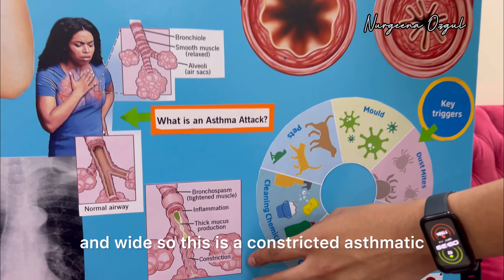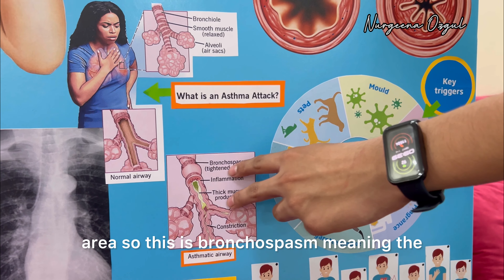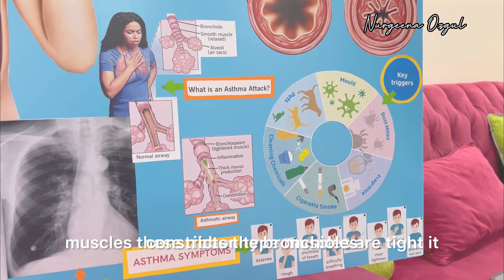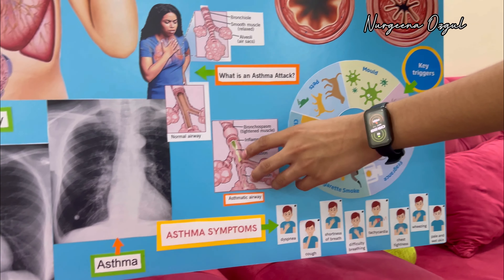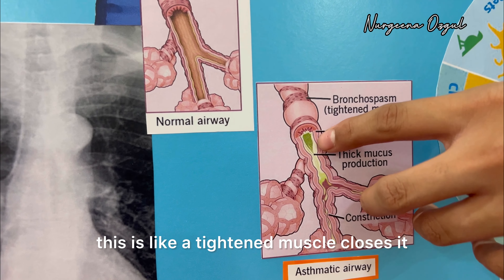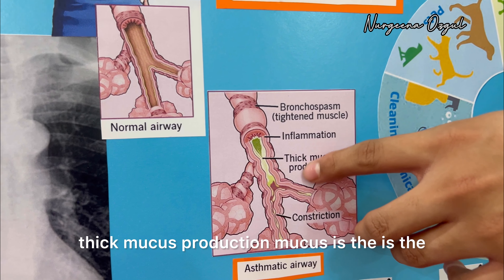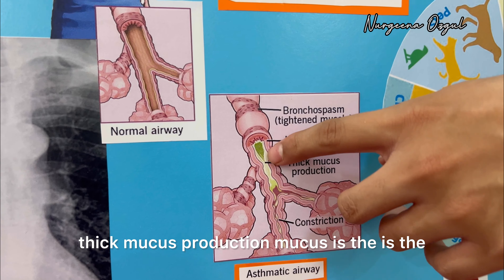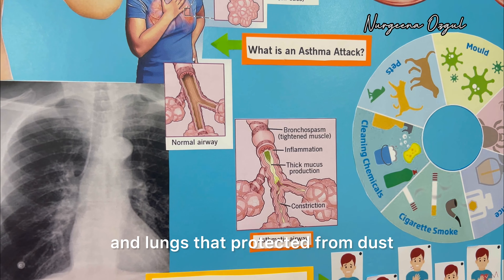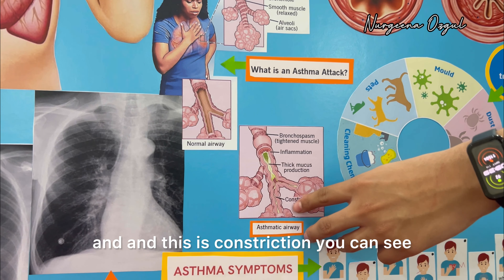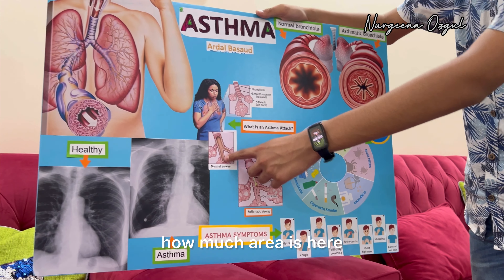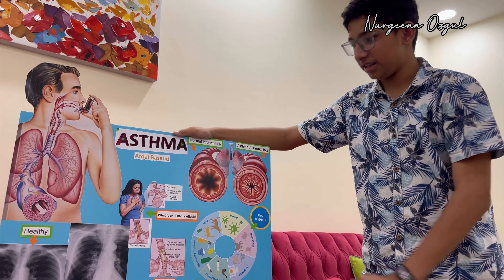This is a normal airway — it's open and wide. This is a constricted asthmatic area. This is bronchospasm, meaning the ribbon-type muscles around the bronchioles are tight. This is inflammation — you can see how a tightened muscle closes the airway. Thick mucus production also occurs — mucus is a gel-type substance in our throats and lungs that protects from dust. You can see how much less area is available here compared to the normal airway.